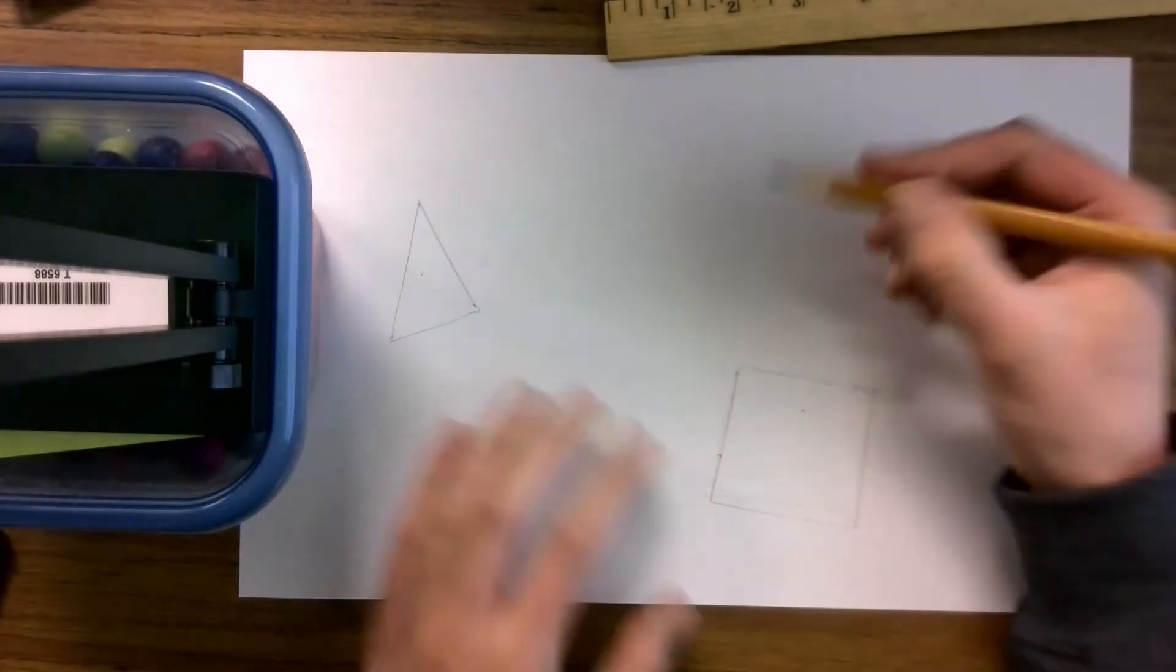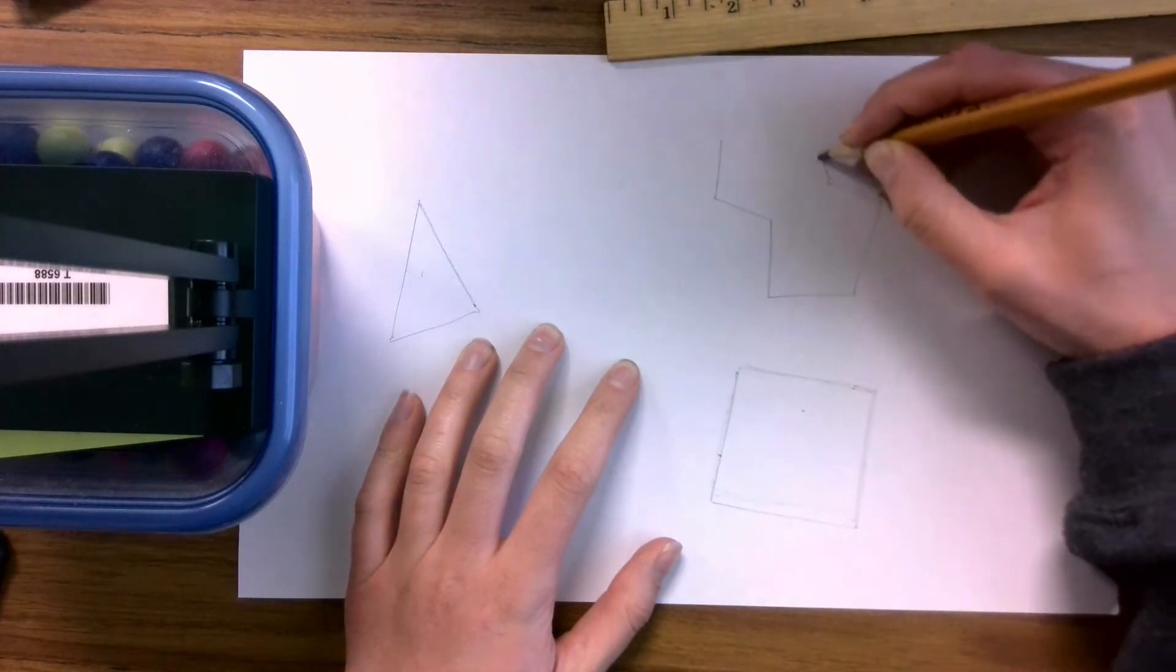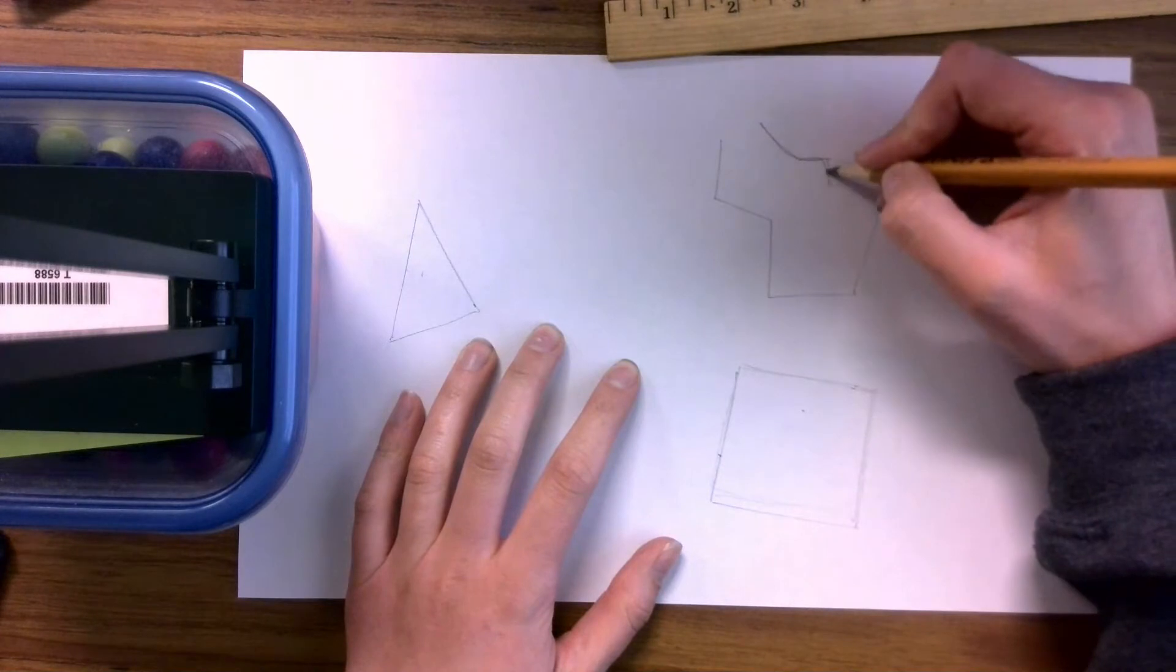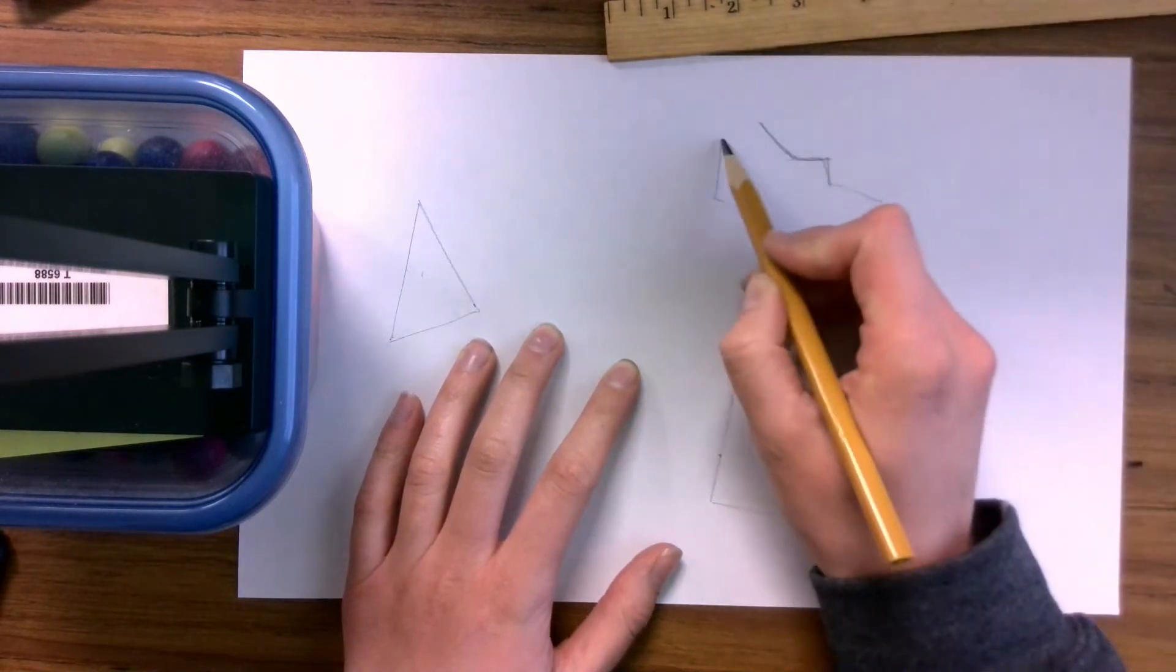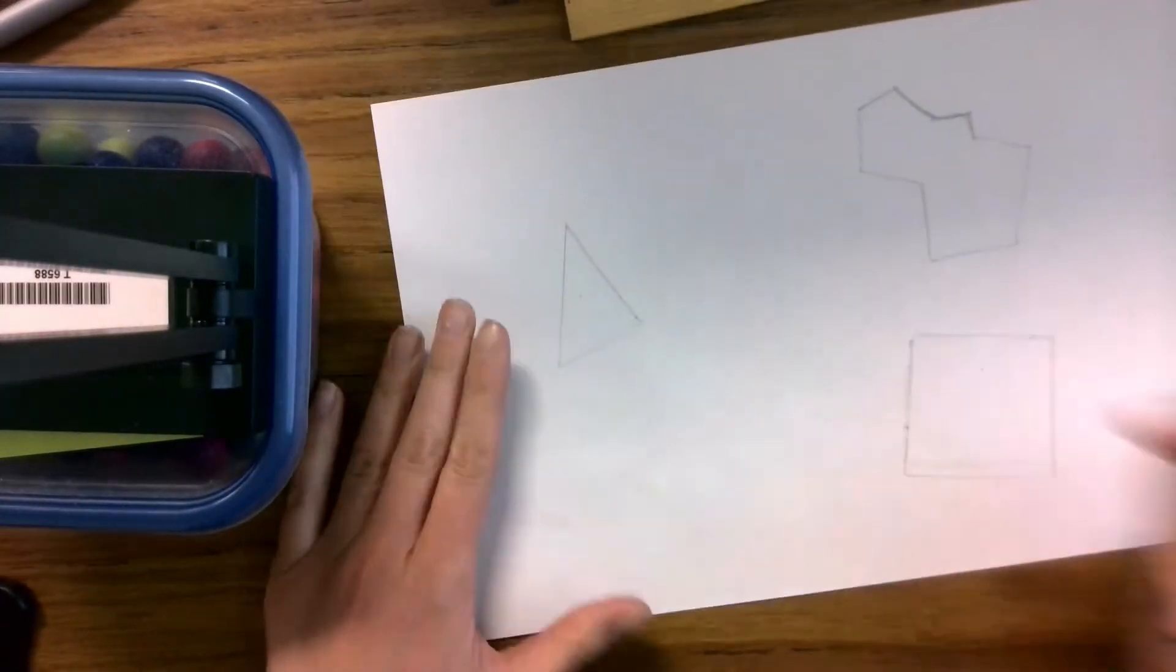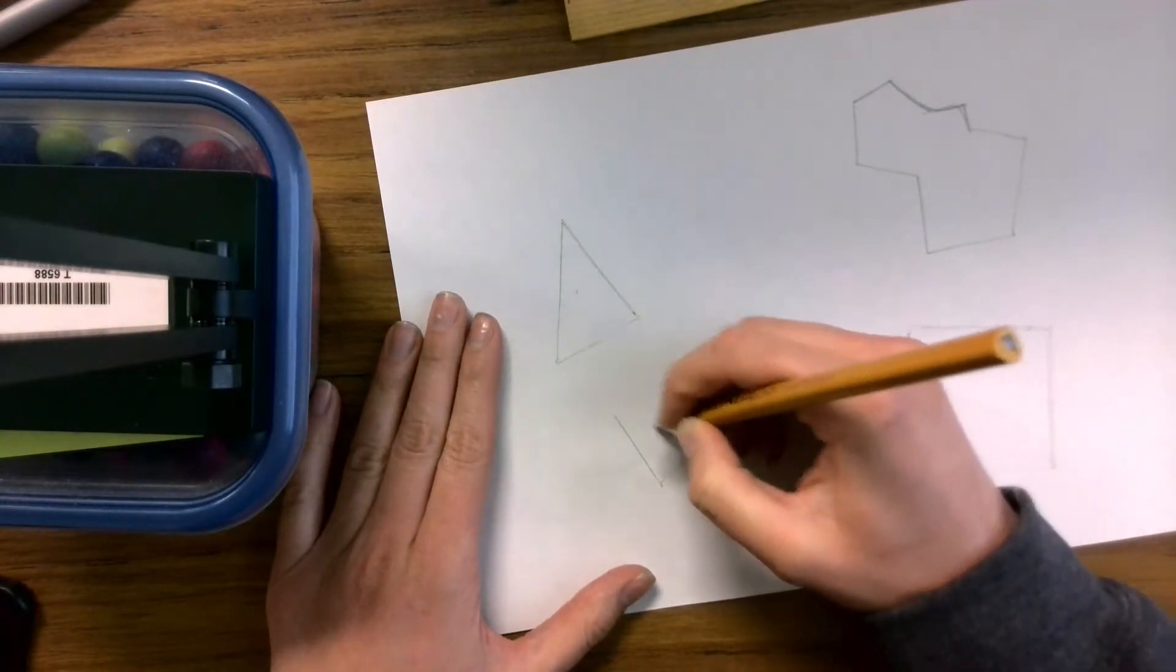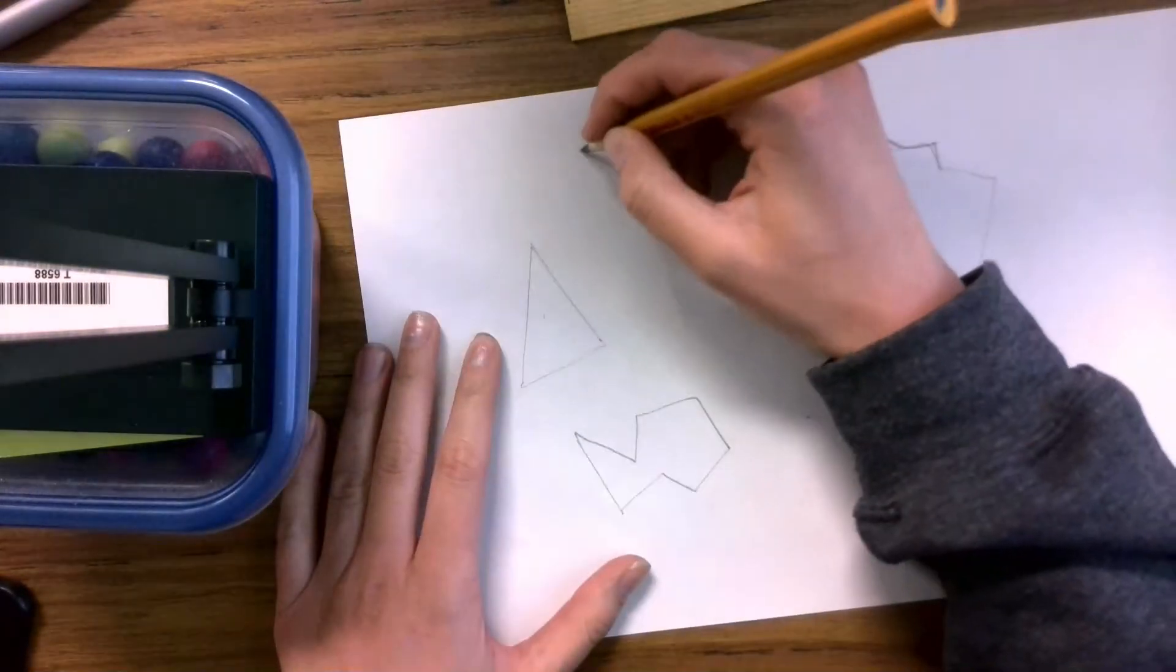So I'm just going to draw a bunch of those. Could be anything really. Don't do what I just did. You don't want to draw any sort of curved lines, all very straight and angular lines. So you're going to draw that and you're going to fill your whole paper with it.